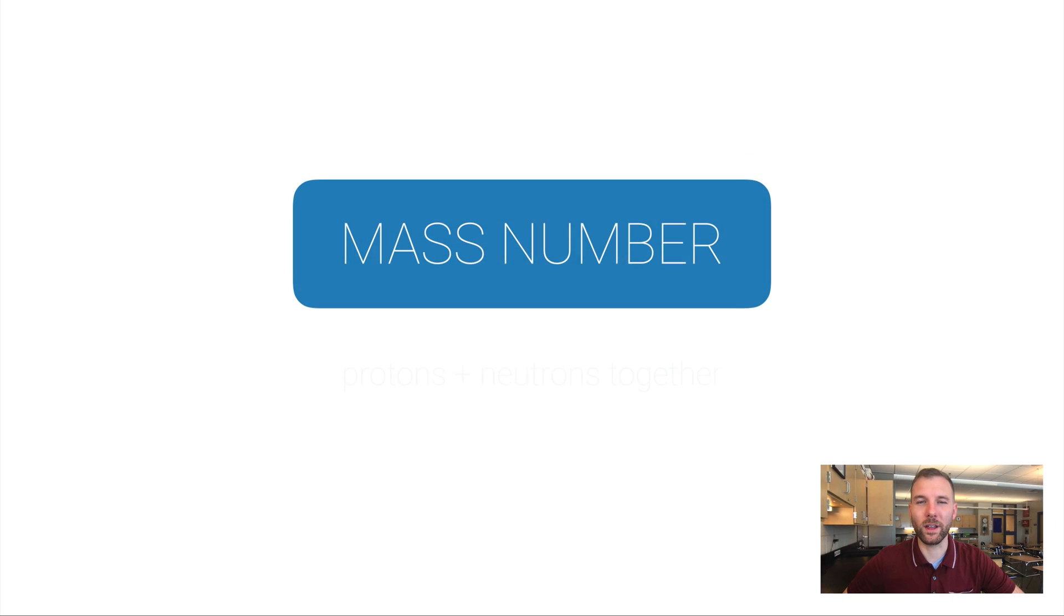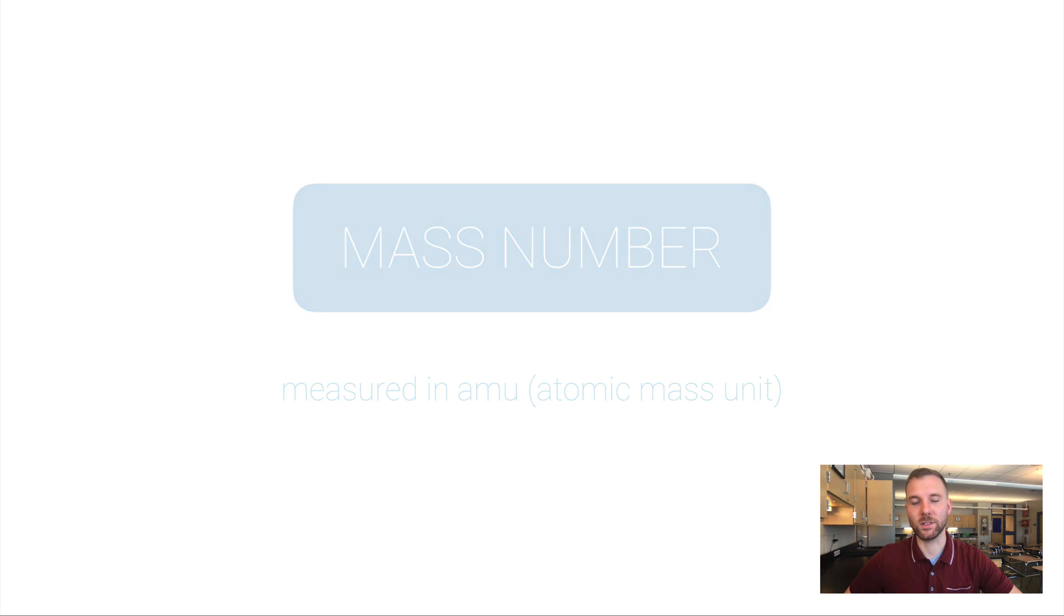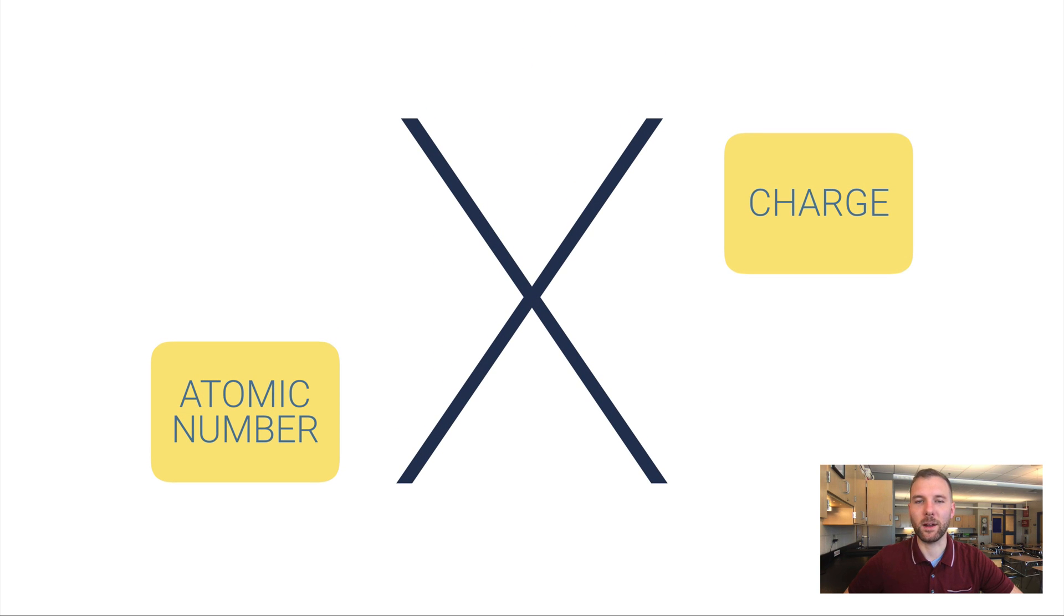And so the mass number is super related to this. It's the number of protons in the nucleus plus the number of neutrons in the nucleus. We call it the mass number because these are the two particles that really give the atom its significant mass. Electrons have a little bit of mass but it's so small we kind of ignore it. And so that's where it gets its name, the mass number, because protons and neutrons are the two massive particles in the atom. Now it's expressed in AMU or atomic mass unit.